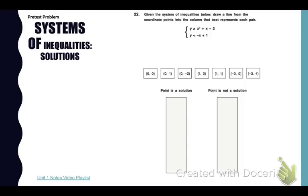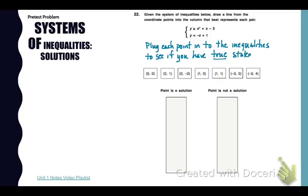Now turn to number 22 in your pretest. Given the system of inequalities below, draw a line from the coordinate points into the column that best represents each pair. So is it a solution or not? The way that I have mine set up it's not going to easily draw lines. So instead we're just going to list those ordered pairs in the proper column. You want to plug each point into the inequalities to see if you have two true statements. If you have two true statements then it's a solution. But if you don't it is not a solution.